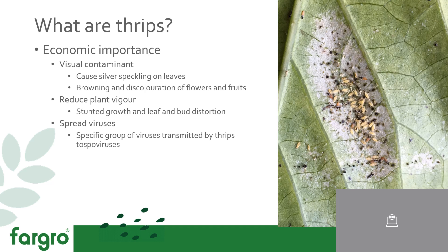For food crops, they reduce plant vigour, cause stunted growth, leaf and bud distortion, meaning that yields are inhibited. Most significantly, they are also one of the main vectors for plant viruses — so much so that there's a specific group of viruses transmitted exclusively by thrips, known as TOSPO viruses.